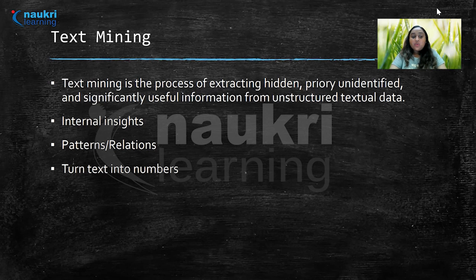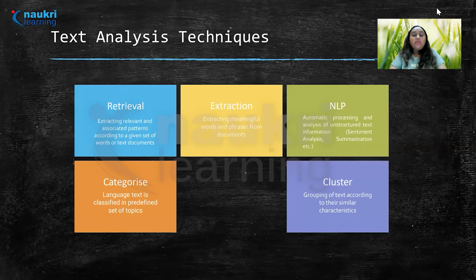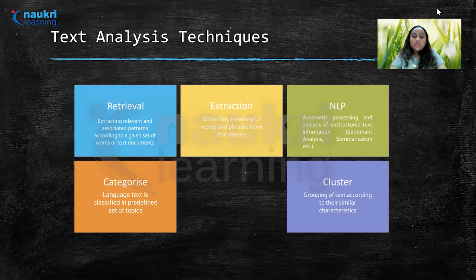Text mining deals with natural language texts, either stored in semi-structured or structured formats. The very first text analysis technique is information retrieval. It refers to the process of extracting relevant and associated patterns based on a specific set of words. The information retrieval system makes use of different algorithms to track and monitor user behaviors and discover relevant data accordingly. For example, Google and Yahoo search engines are the two most renowned information retrieval systems.